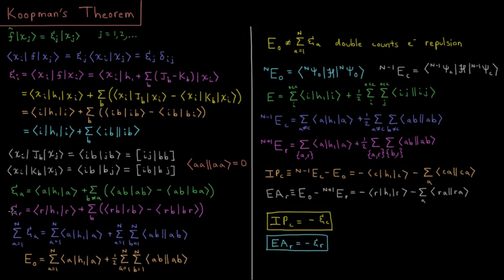Conversely, for a virtual orbital, ε_r approximately represents the negative electron affinity — how much the system energy changes if an extra electron is added to that orbital. However, this approximation is used much less often, because the errors that cancel favorably for ionization potentials go in the wrong direction for electron affinities. Calculating electron affinities is a significantly more difficult problem in quantum chemistry simulations than calculating ionization potentials, for reasons that will be addressed in later chapters.